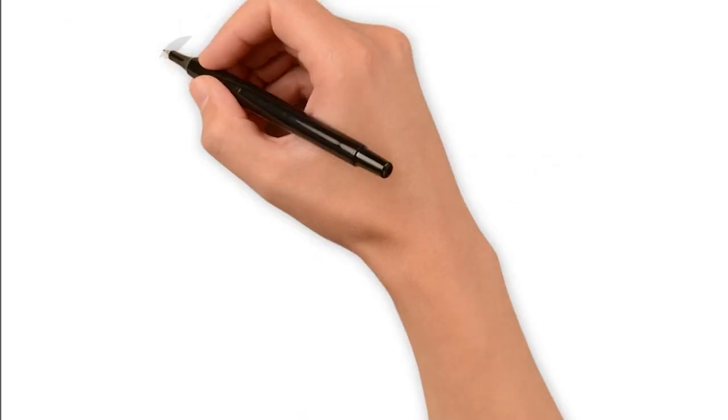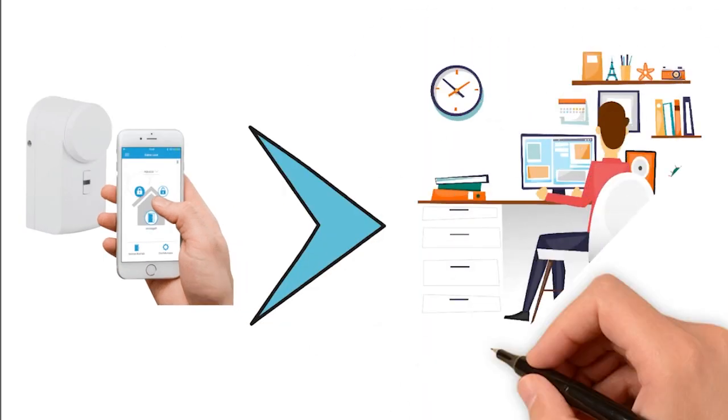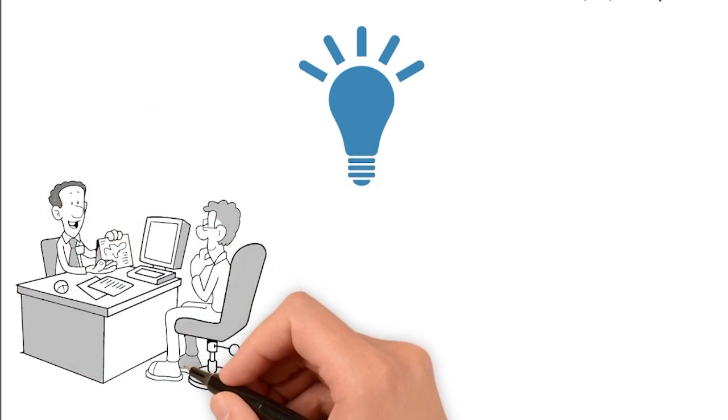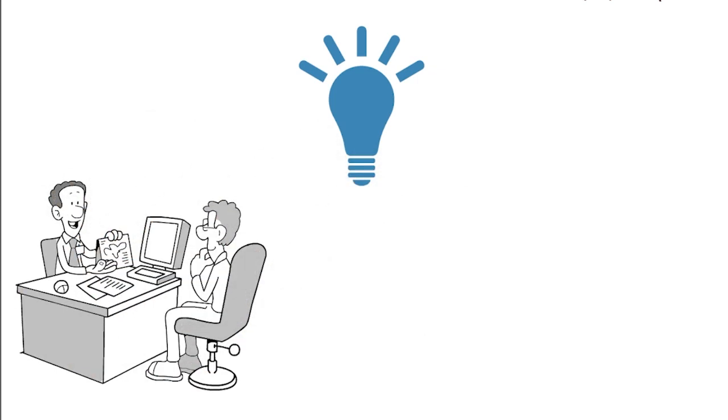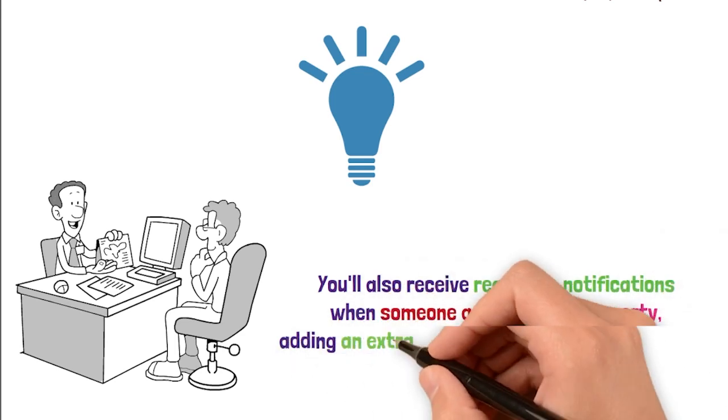But wait, there's more. With some smart locks, you can monitor entry and exit times, giving you a better idea of your guest's stage duration and helping you manage check-ins and check-outs more efficiently. You'll also receive real-time notification when someone accesses the property, adding an extra layer of safety and peace of mind.